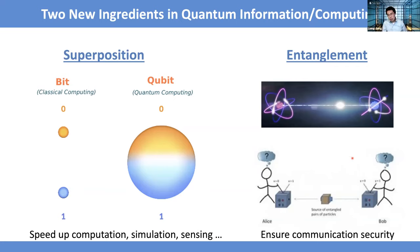That's important for generating a secret key — it will ensure secure communication. So the two key ingredients are superposition and entanglement. Once you have these two, you can have some intuitive understanding of why we may have quantum advantage in quantum algorithms for computing, simulation, sensing, or communication.